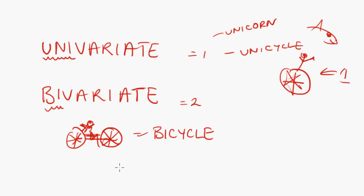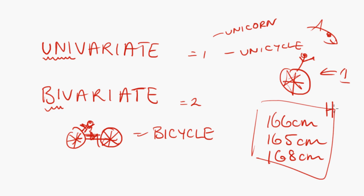But nevertheless, uni meaning one and bi meaning two. So univariate data is where we're looking at one variable, one piece of information about whatever information it is that we're collecting. And bivariate data is about two variables. So say I've got a group of people and I'm going to collect some data from them and analyze it about how tall they are. So I get my classmates together and I've got some people are 166 centimeters, some people are 165 centimeters, one person is 168 centimeters.